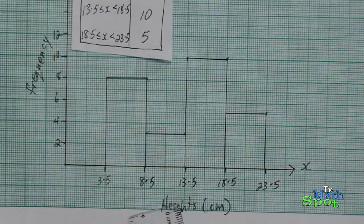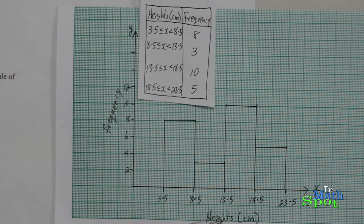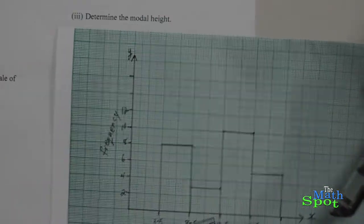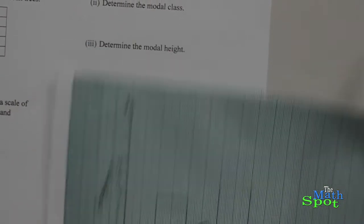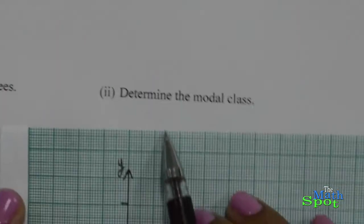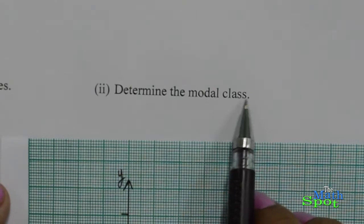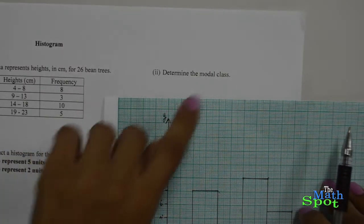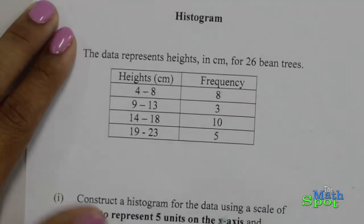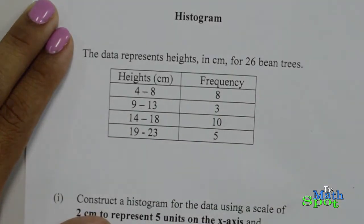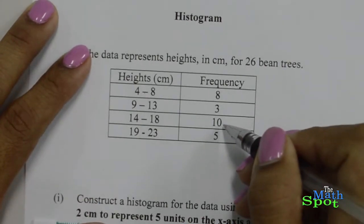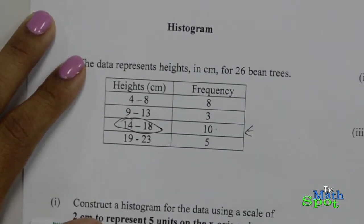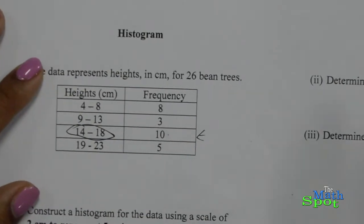And there you have it — your histogram. With this histogram, we can use it to answer several questions. Let's start with question 2: determine the modal class. This can be determined from your table of values or using your histogram. Looking at our table, the modal class is the class with the highest frequency. The highest frequency is 10, which means that 14 to 18 centimeters will be our modal class.